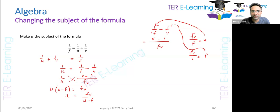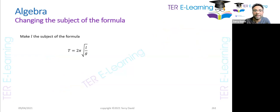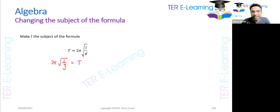Most of these equations are from physics and CXC tends to bring them a lot. This next one is a popular physics equation and we want to make l the subject of the formula. When you have a square root sign, you need to get rid of it by squaring both sides. First I'll rewrite this as two pi times the square root of l over g is equal to t, then divide both sides by two pi to isolate the square root: square root of l over g equals t divided by two pi.